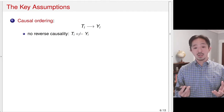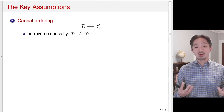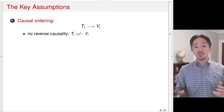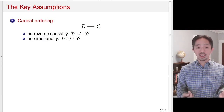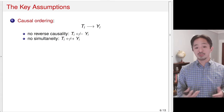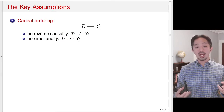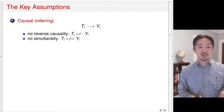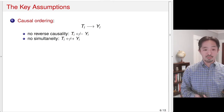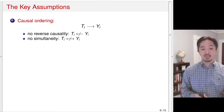In the observed data, we see the different values of the treatment and outcome, and so without assuming the causal ordering, we wouldn't know which is causing which. As a consequence of non-reverse causality, we also end up assuming there is no simultaneity — that is, T and Y don't cause each other. This is a very important assumption that's often made in much of the causal inference literature.